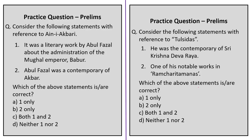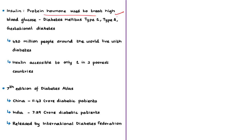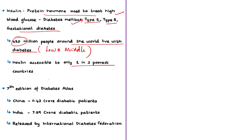Now let us move on to the next news article, about a World Health Organization initiative to expand access to affordable insulin. Insulin is a protein used as a medication to treat high blood glucose levels, including Type 1 diabetes, Type 2 diabetes, and gestational diabetes. More than 420 million people around the world live with diabetes, and most of these people live in low- and middle-income countries. Insulin is accessible to only one in three of the poorest countries due to its high cost, making this WHO move very important.